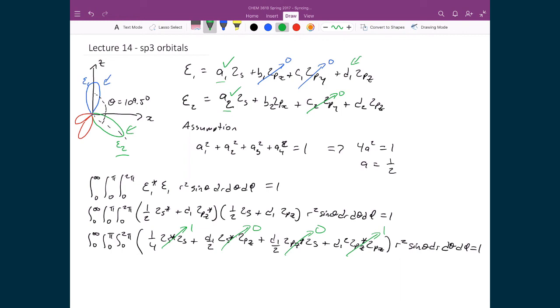And so the result that I'm going to be left with is 1 quarter plus d1 squared is equal to 1. And so what that means is when I simplify this, I'm going to end up getting a term where I'm going to get d1 squared is equal to 1 minus 1 quarter, which then equals 3 quarters.